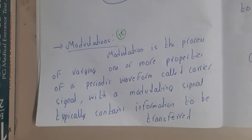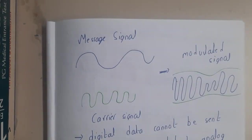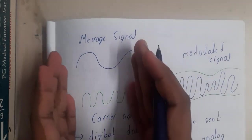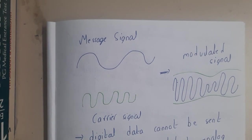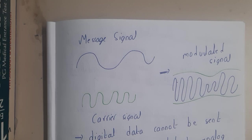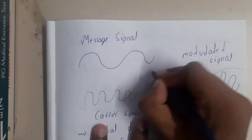I understood that you got nothing from that definition, so that is the reason I have drawn a small diagram so that everyone can understand easily. Assume that you want to send a particular message or data from your device to some other device. We say the radio waves will be sent — so how do these signals get transferred? What is the back end? This modulation concept is actually easy to understand.